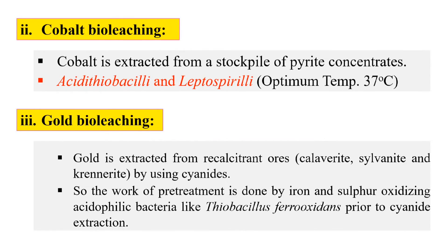First, a pre-treatment is done by iron and sulfur-oxidizing acidophilic bacteria like Thiobacillus ferrooxidans, prior to this cyanide extraction. After this pre-treatment, the gold is extracted in an efficient quantity. The factors affecting extraction — like temperature and pH — should be well controlled in the fermenter. The acidity is controlled at pH 1.6 and temperature should be 40 degrees centigrade. By these steps, you can also extract gold.